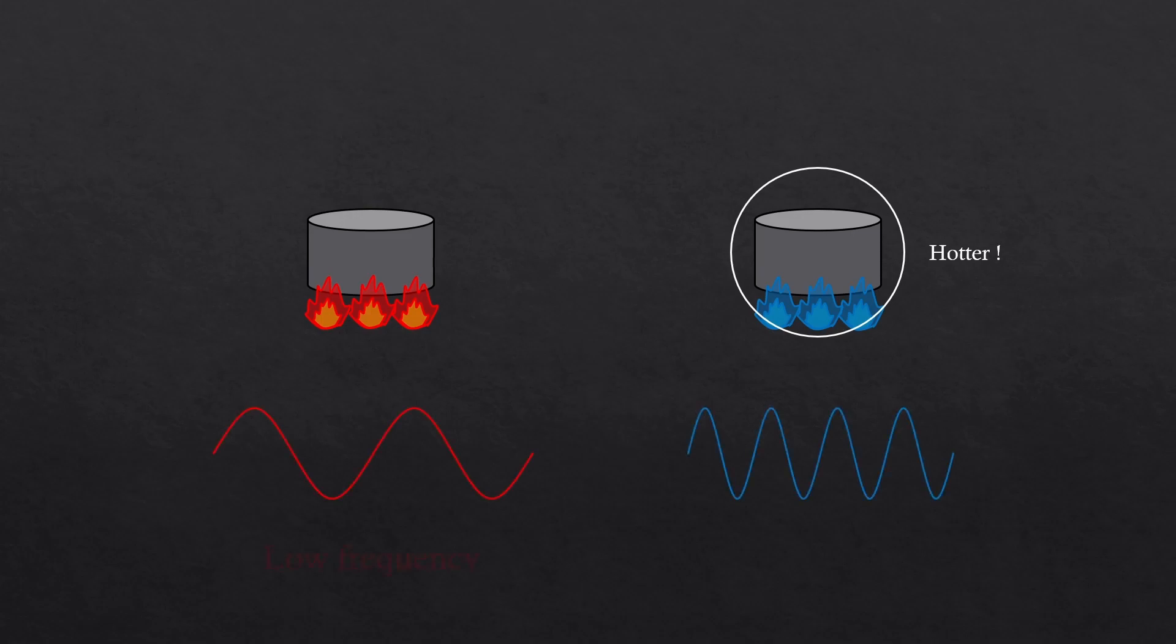You know how red light has a lower frequency and blue light has a higher frequency? In fact, you probably learned that energy equals Planck constant times frequency, which means higher frequency gives higher energy. So that's why the blue fire is stronger than the red fire.